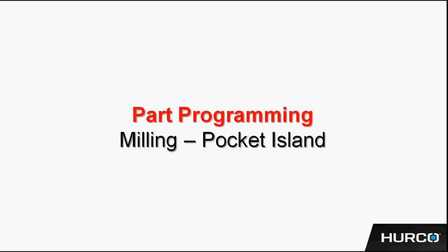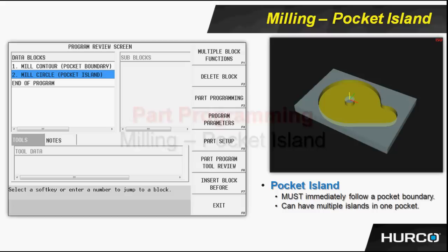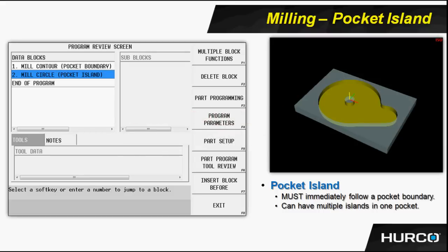We realized that any piece of geometry that we program in the control could be done as a pocket boundary. Now we want to talk about pocket islands. Pocket islands are just pieces of geometry that are left standing in the middle of a pocket boundary. They can be simple geometry shapes such as circles and frames, or they could be arbitrary shapes using lines and arcs.